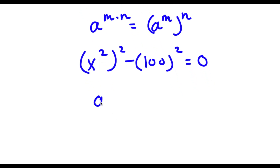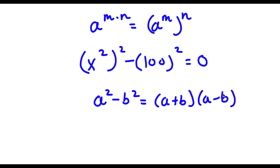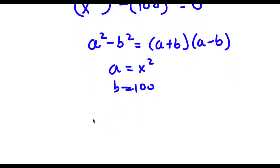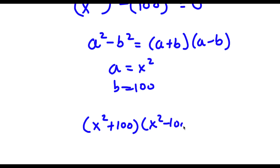Now if I have something in the form a squared minus b squared, this is equal to a plus b times a minus b. So in this case a is equal to x squared and b is equal to 100. So now I have x squared plus 100 times x squared minus 100, and this is equal to zero.